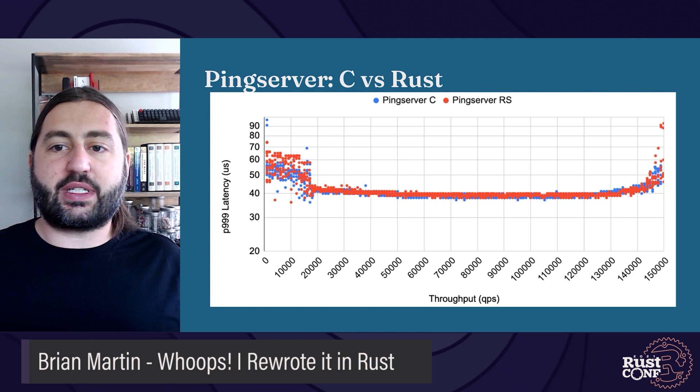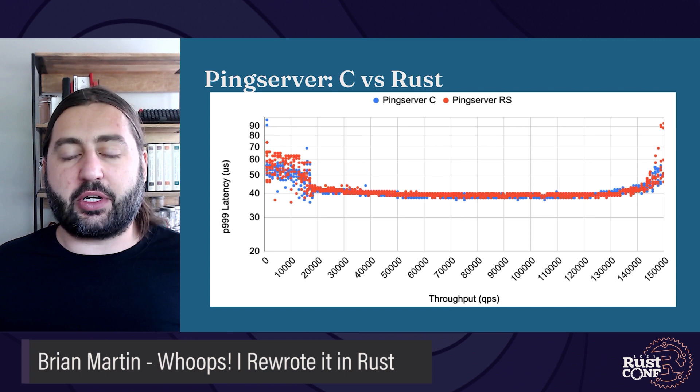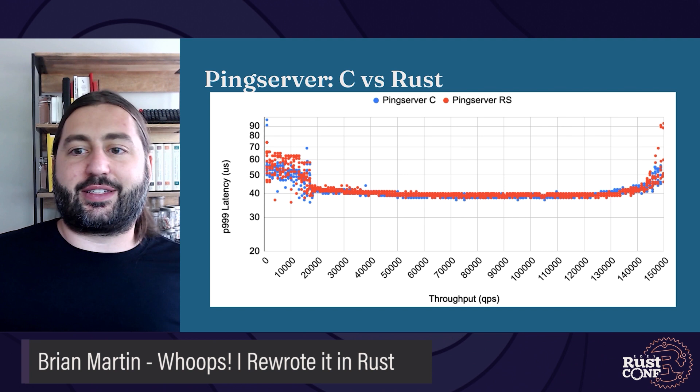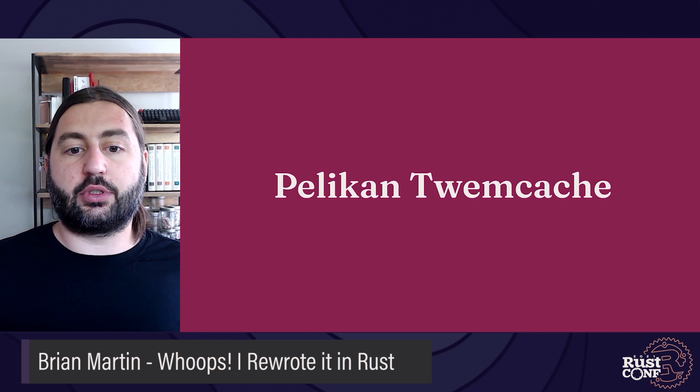Then we benchmark again. Looking at P99.9 request latency versus request rate, the Rust and C implementations are pretty close. This looked good to submit a pull request and merge into the Pelican repo on GitHub. Feeling good about this, it was time to move on to what I was actually supposed to be doing.